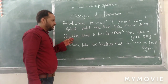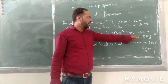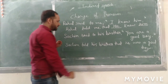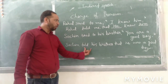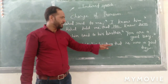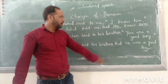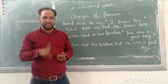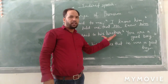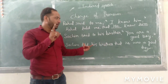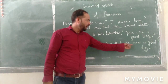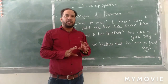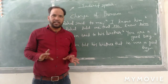Next sentence: Sachin said to his brother, 'You are a good boy.' Here 'you' is the second person pronoun. The second person pronoun will be changed according to the object of R.B. Our subject is 'his brother.' His brother is a boy, so it becomes 'he' — the third person pronoun. We can see that pronoun change is not difficult.